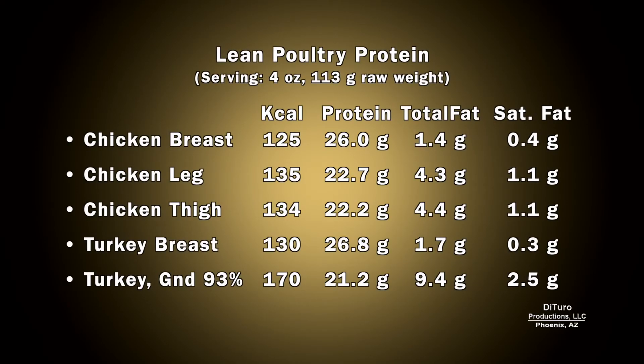The best sources of lean poultry are chicken and turkey breast meat. While legs, thigh, and ground turkey have more fat and slightly less protein, they're still very low in saturated fat.